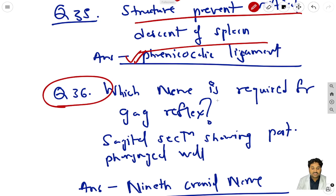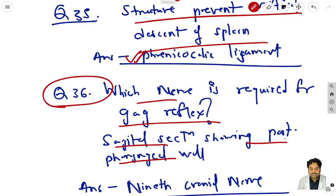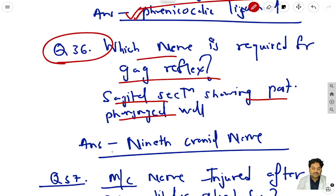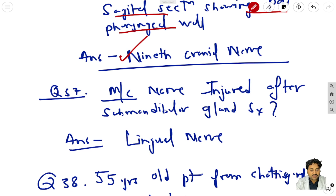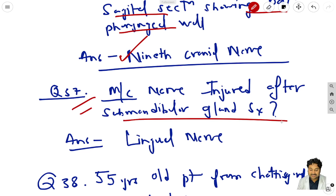Question 36: which nerve is required for the gag reflex? In the sagittal section, if you show the posterior pharyngeal wall, the ninth cranial nerve is involved - so the answer is the 9th cranial nerve. Question 37: most common nerve injured after submandibular gland surgery - if the mandibular gland is involved, the facial nerve is the answer.